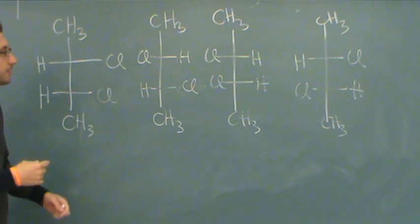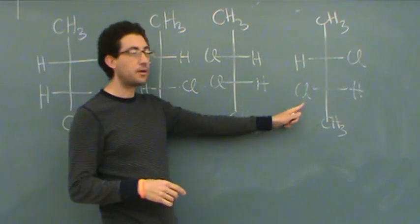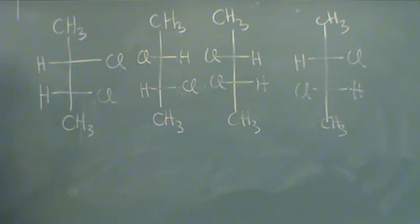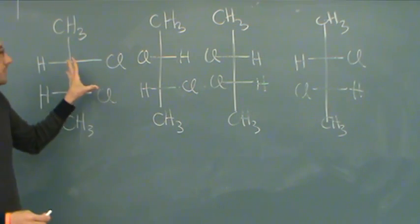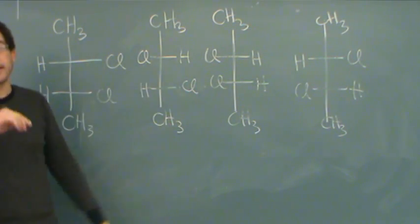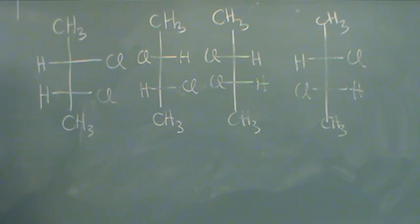Here's a Fischer projection example where we want to look at these four molecules and see how they're related. You can see they're all pretty similar. They all have methyls on top and bottom, and they all have two chlorines, so they're all 2,3-dichlorobutane. But the stereochemistry at the second and third carbon are different in each case.